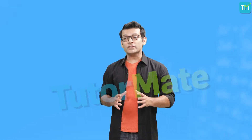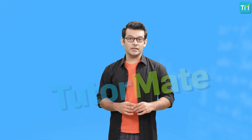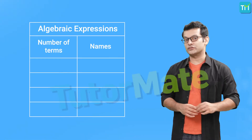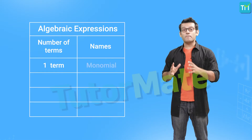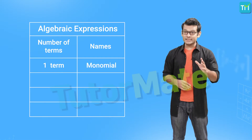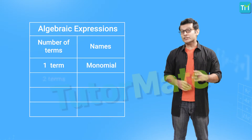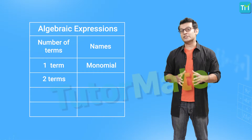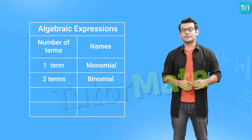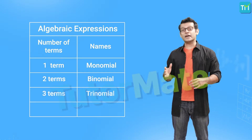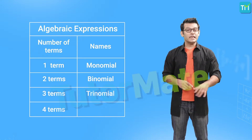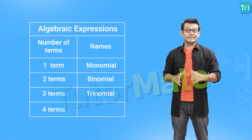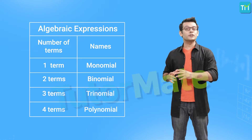Based on the number of terms in the expression we have different names for algebraic expressions. If the expression contains one term then we call it a monomial. If it contains two terms then the expression is known as a binomial. Trinomials are algebraic expressions that have three terms. And if we have more than three terms then the expression is called a polynomial.